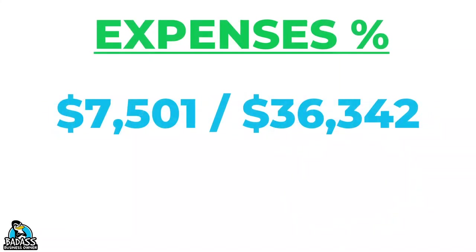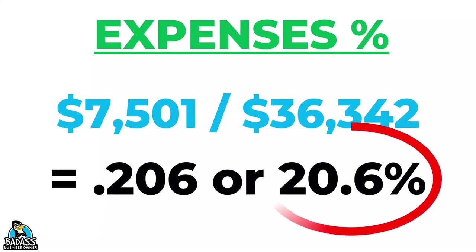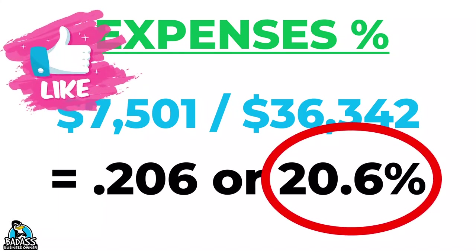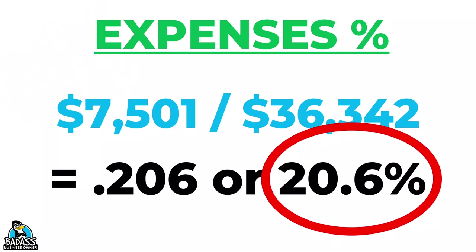Let's do another one. Let's say you want to know what your operational costs are running you. You grab your P&L and you see that it's $7,501. Everything is a percentage of sales, so we take $7,501 and divide it by our sales of $36,342, and we get 0.206. We move that decimal over two places and we get 20.6%.